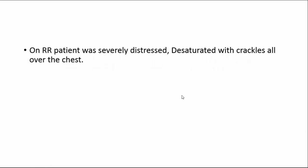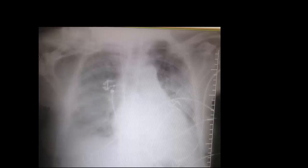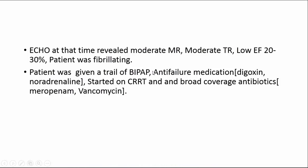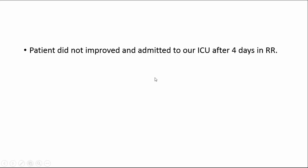In the resuscitation room, the patient was severely distressed, desaturated, and there was crackle all over the chest — a white chest X-ray. The patient was in very bad shape. Echo revealed moderate mitral regurgitation, tricuspid regurgitation, and low ejection fraction of 20 to 30 percent. The patient was given a trial of BiPAP, anti-failure medication, digoxin, noradrenaline, started on CRRT, and broad coverage antibiotics — meropenem and vancomycin. Unfortunately the patient didn't improve and was admitted to our ICU after four days in the resuscitation room.